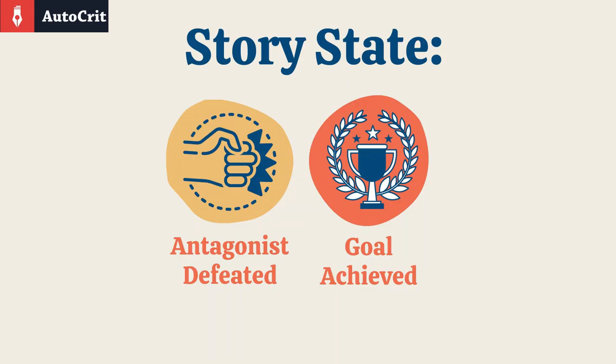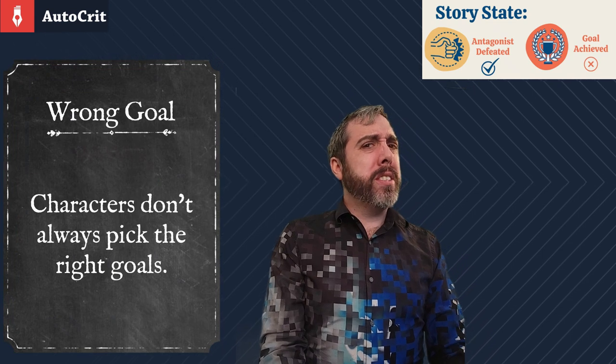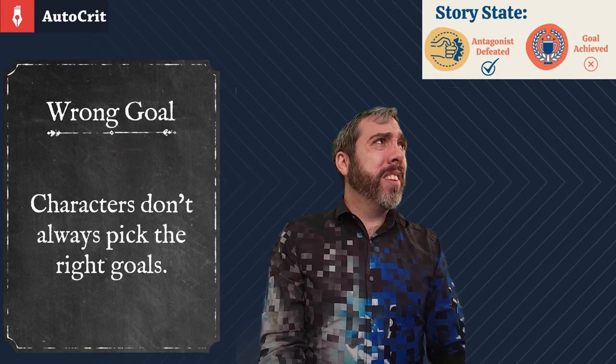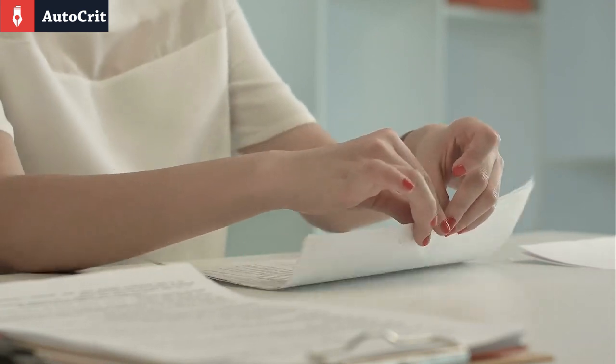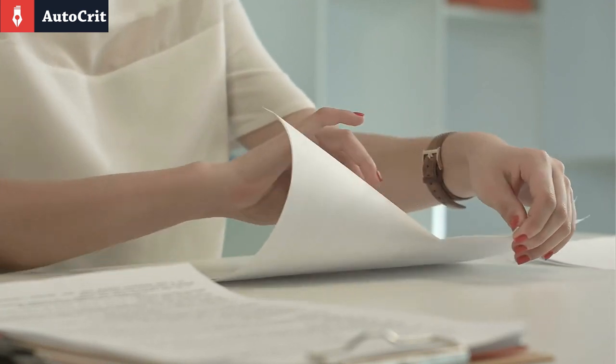But does the main character always get what they want in this cruel life? Of course not. Which is why there is the next option. Antagonist defeated. Goal fail. In these stories, it turns out the hero was a little clueless about what they needed in life. They end up tossing out their goal for something different instead.